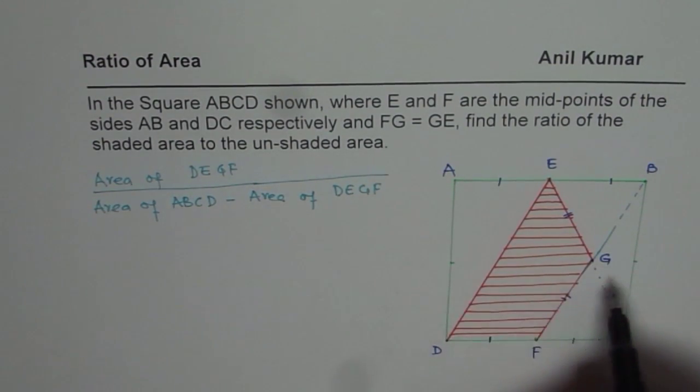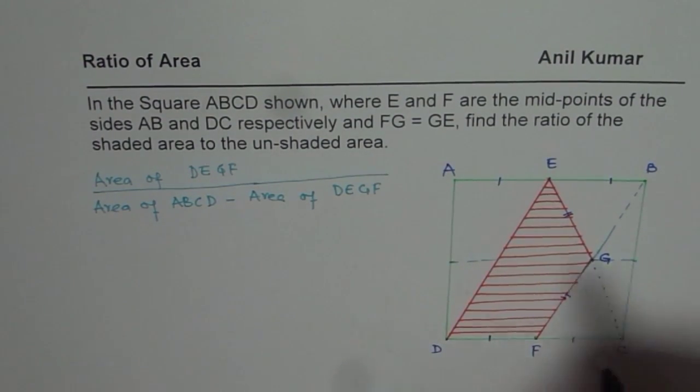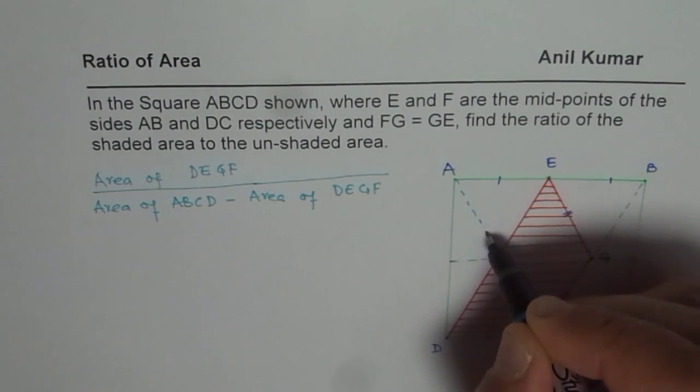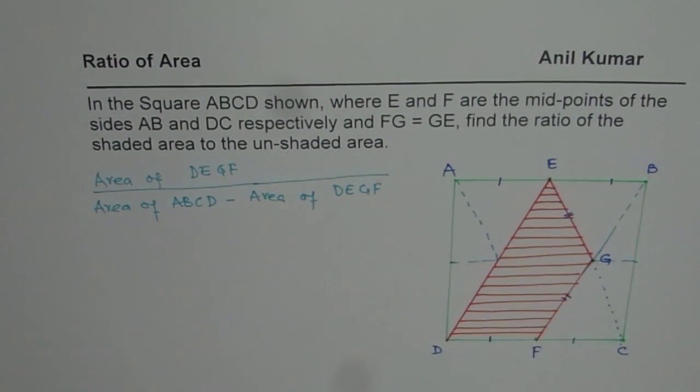And then we can also extend this line and join with the other corner of the square. You get something like this. Similar type of construction we will do. We will join these midpoints here and join with the corners. The midpoints of this line are being joined with the corners of the square.